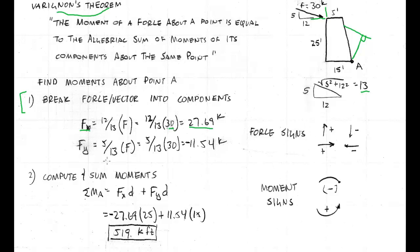The Y component, the shallow side, it's 5/13 of the force, which turns out to be 11.54, and it's negative because it's down. Remember our signs, negative down. We could check this by using the Pythagorean theorem on this and see if the resultant of X and Y squared, added, and square rooted equals 30 kips, which it does.